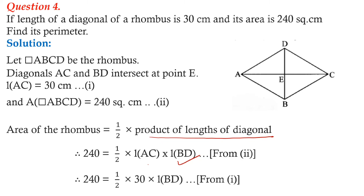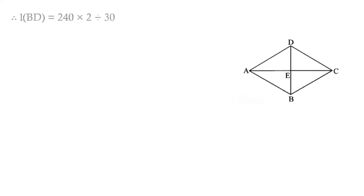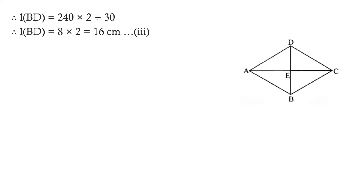We shift 2 to the other side: BD equals 240 into 2 divided by 30. Cancelling 240 by 30 gives 8, so BD equals 8 into 2 equals 16 centimeters. The length of diagonal BD is 16 centimeters.